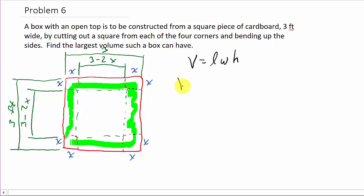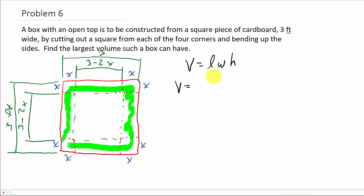So the volume of the box would be the length of this side times the length of this side, which is just 3 minus 2x, times 3 minus 2x. That's length times width, and then times the height, which is in this case, x.